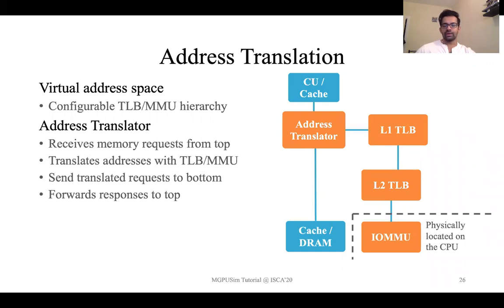In case of an L1 TLB miss, it is forwarded to the L2 TLB. The L2 TLB is physically shared between the different compute units of the GPU, so all compute units access the same L2 TLB. As a result, the L2 TLB is multi-ported to achieve high performance. If there is an L2 TLB hit, it will return the response to the corresponding L1 TLB and the physical address access can continue accordingly.